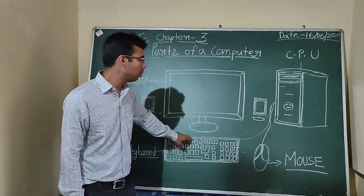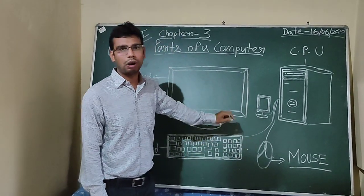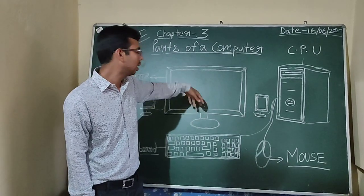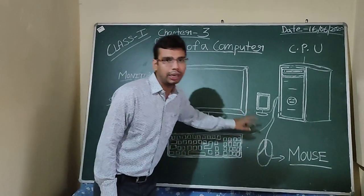Monitor, keyboard, CPU and a mouse are basic parts of computer system. Let me explain you about monitor and mouse in detail.